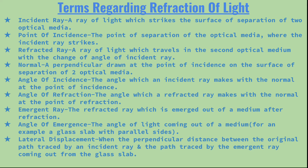After refraction, the ray of light which travels into the second optical media with a change of angle relative to the incident ray is known as the refracted ray. Then there is the normal — the perpendicular drawn at the point of incidence on the surface of separation of the two optical media.